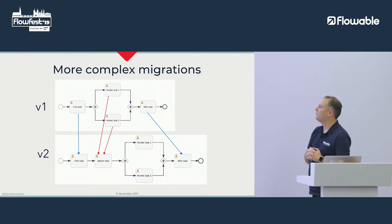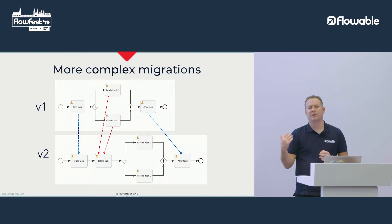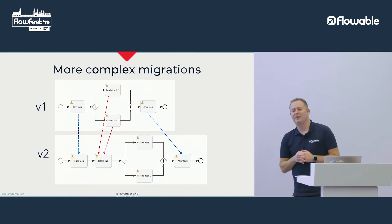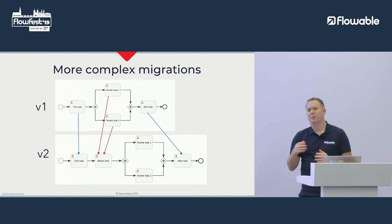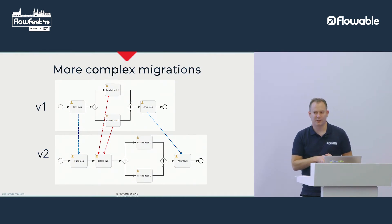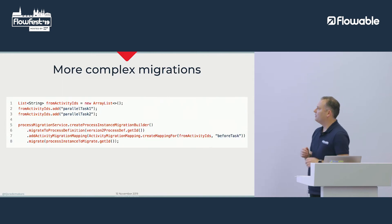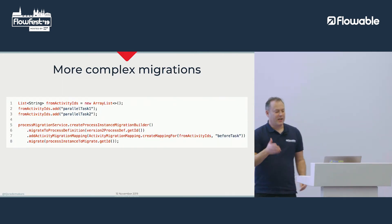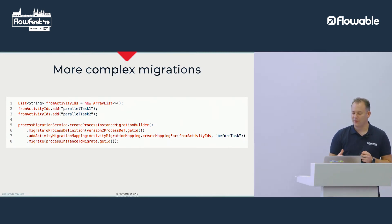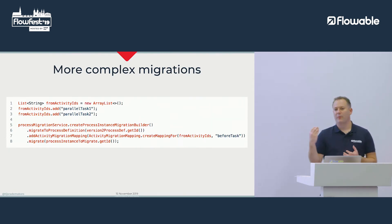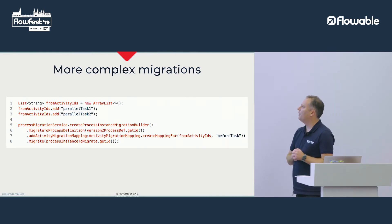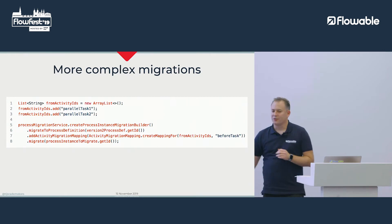We can go quite deep in this. We also support some cases for process migration with multi-instance — multi-instance is always a difficult thing in BPMN — though it's still not fully supported in every case. With the API, instead of creating a mapping for a single from activity ID, you can say I want to map with a list of from activity IDs to a single activity ID, and everything else stays exactly the same.